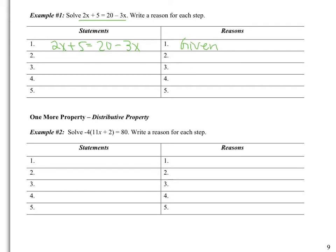Anytime you're solving, you need to get X alone. So the first thing I'm going to do is add 3X to both sides. Adding 3X to the left side, I get 5X plus 5 equals 20, and the X is gone from the right side. Because I added 3X, this is called the addition property of equality.